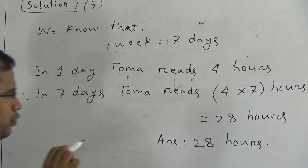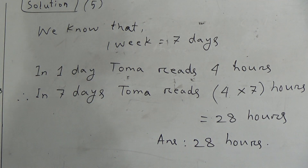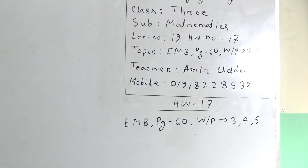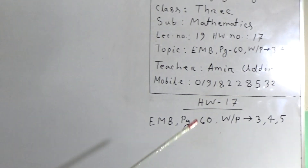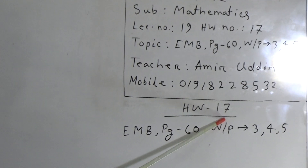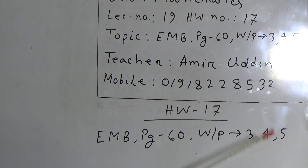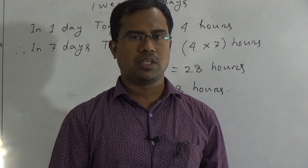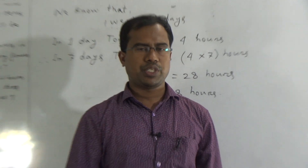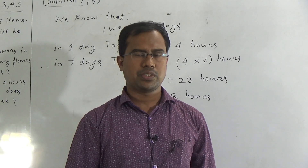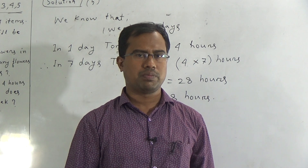Dear students, I hope you have understood it. We have finished our today's class. Now I am giving you your SWO. Our today's CW is your SWO, and today's SWO number is 70. Elementary Mathematics book, page number 60, word problem 3, 4, and 5. Okay, do your SWO properly and submit on next Saturday. Stay home, stay safe, obey your parents' orders. Thank you for watching the class. Allah hafez.